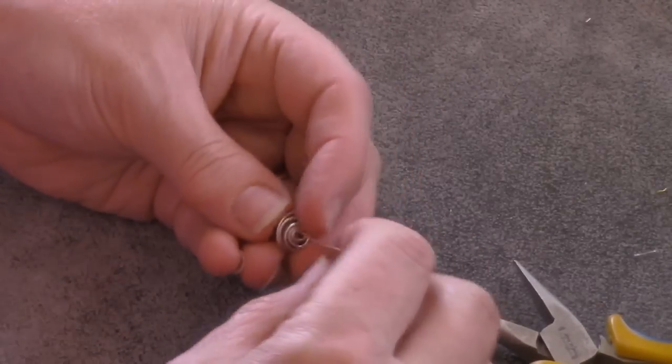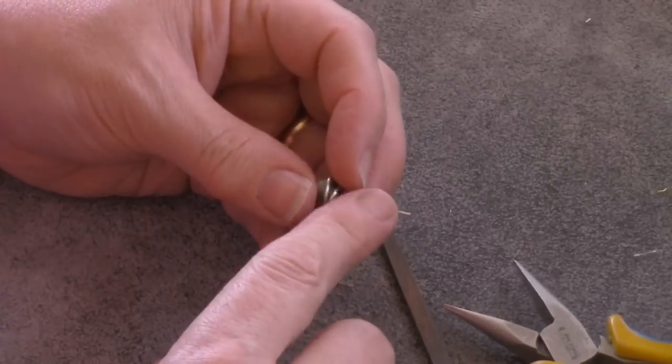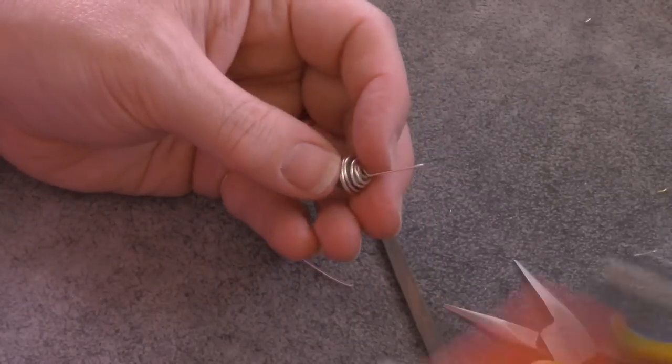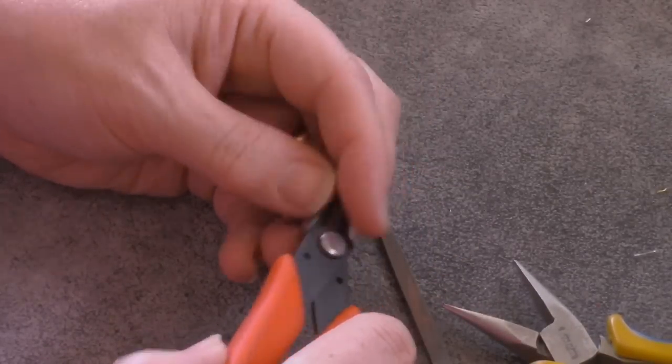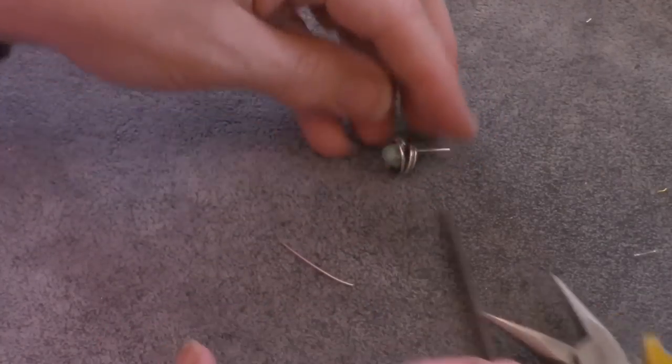All you need to do now is file the end of it so that it's easy and if the post is too long, no problem, just trim it off. Trim it off to a length you like and you're going to need an ear backing in order to wear these.